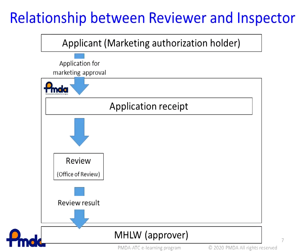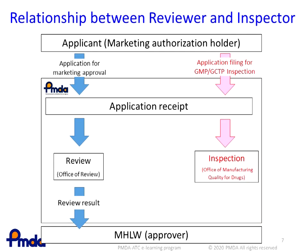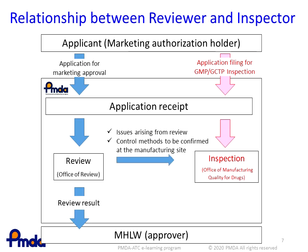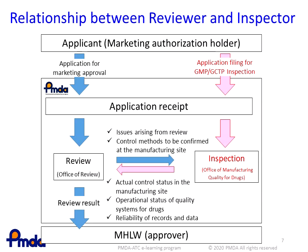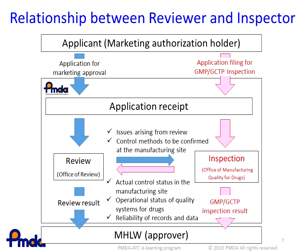After the applicant submits the application for GMP-GCTP inspection, inspections are conducted by inspectors in cooperation with reviewers. There are approximately 2,000 applications per year, of which about 200 involve on-site inspections. Issues arising from marketing approval review by the Office of Review are shared with the Office of Manufacturing Quality for Drugs. Inspectors incorporate items to be observed in relation to the issues shared by reviewers into the inspection schedule, and deficiencies found in the inspection are shared with reviewers. This information sharing enables high-quality review and inspection based on risk.